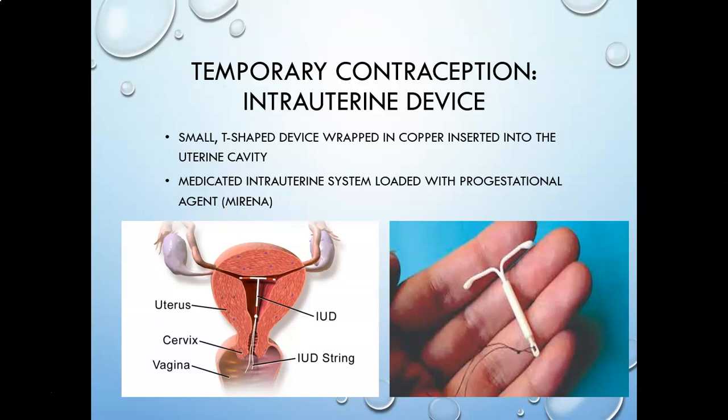A common symptom right after IUD insertion is cramping, which can be pretty intense, along with a little bit of bleeding. Patients should understand this is normal for a couple of days. If cramping or bleeding occurs after that — not associated with a period — it should be investigated, as it could indicate perforation. They also need to report foul discharge or fever, which could indicate an intrauterine infection. Cramping is common but only for the first couple of days.